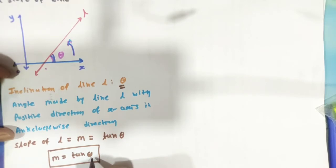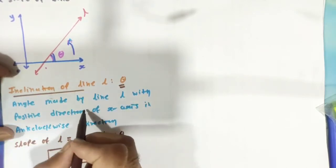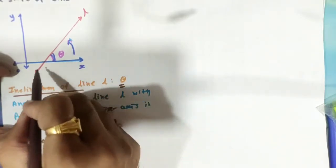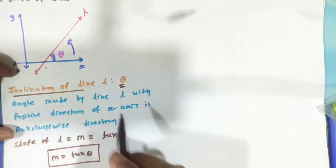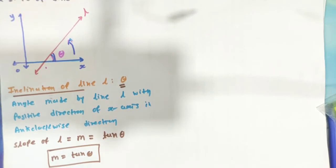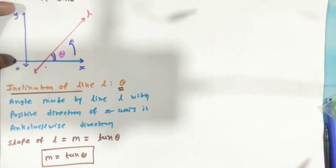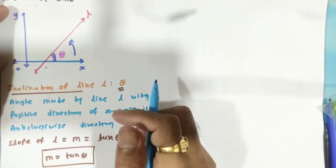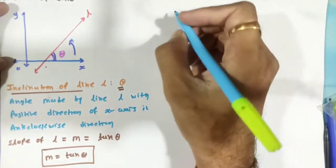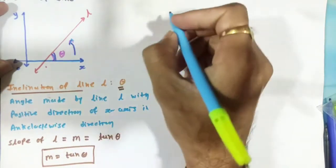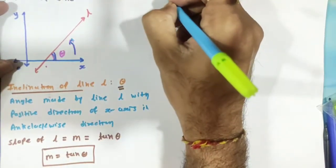What is theta? Theta is the inclination of the line — the angle made by the given line with the positive direction of the x-axis in the anti-clockwise direction. Now, instead of this type of line where theta is an acute angle, sometimes different cases may arise.